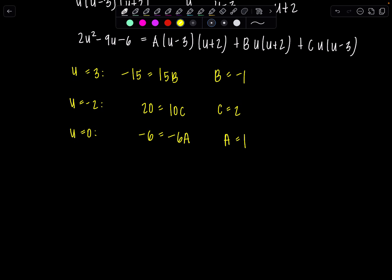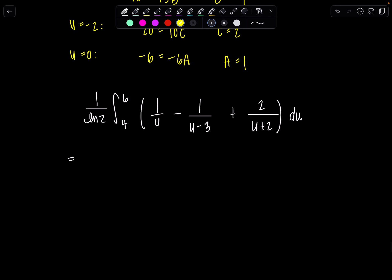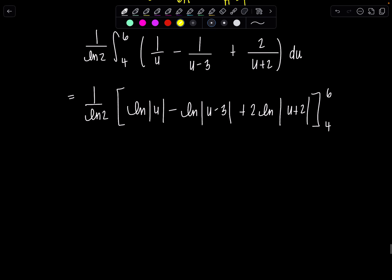So now at long last we have 1/ln(2) integral from 4 to 6 of a/u, then b is -1 over u - 3, plus 2 which is c over u + 2 du. And then we're pretty much home free. All these antiderivatives are going to be ln absolute value of the denominator. And then plus 2 ln absolute value u + 2. Always keep the absolute value as long as there's a variable quantity inside. And then once you evaluate it at your limits of integration you can drop it.